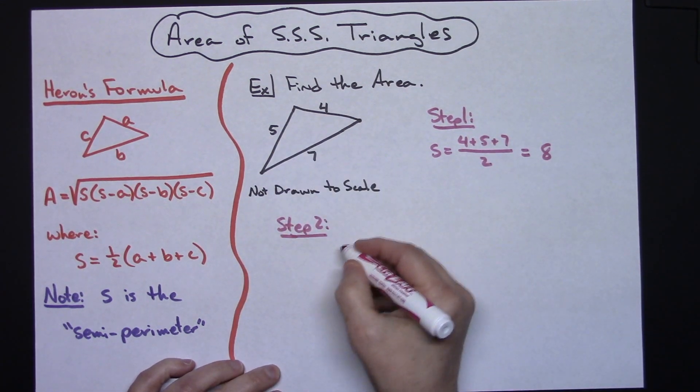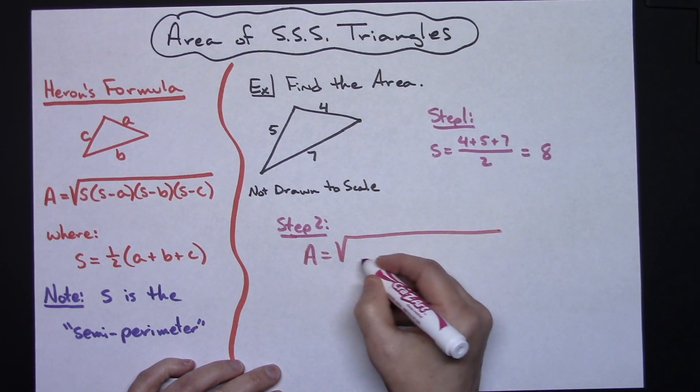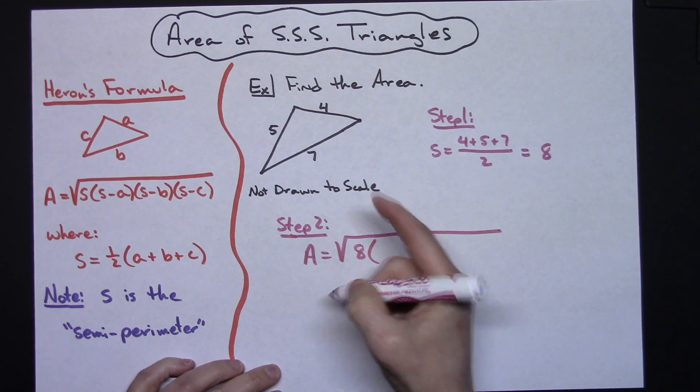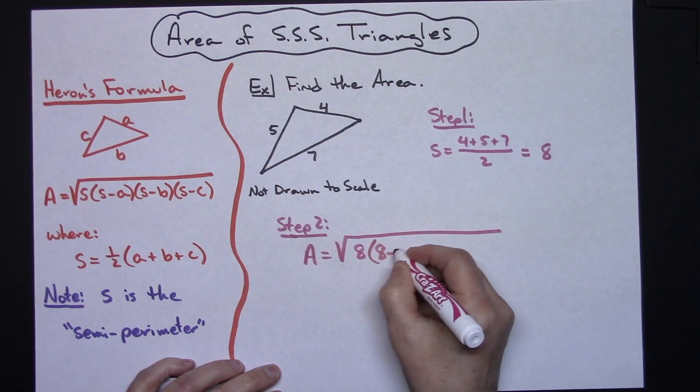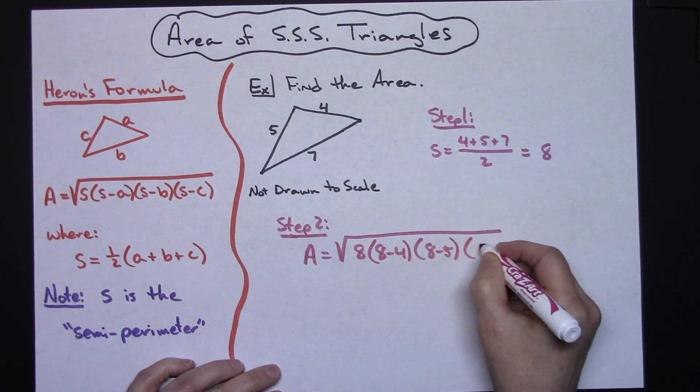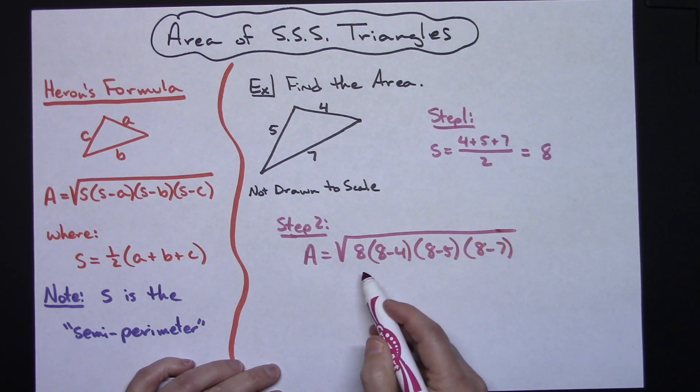It really does not matter which one is a, b, or c, as long as you subtract them all. So my area is going to be equal to the square root of: I've got to take 8 times (8 minus 4), and then let's just go in order, (8 minus 5), and then (8 minus 7).